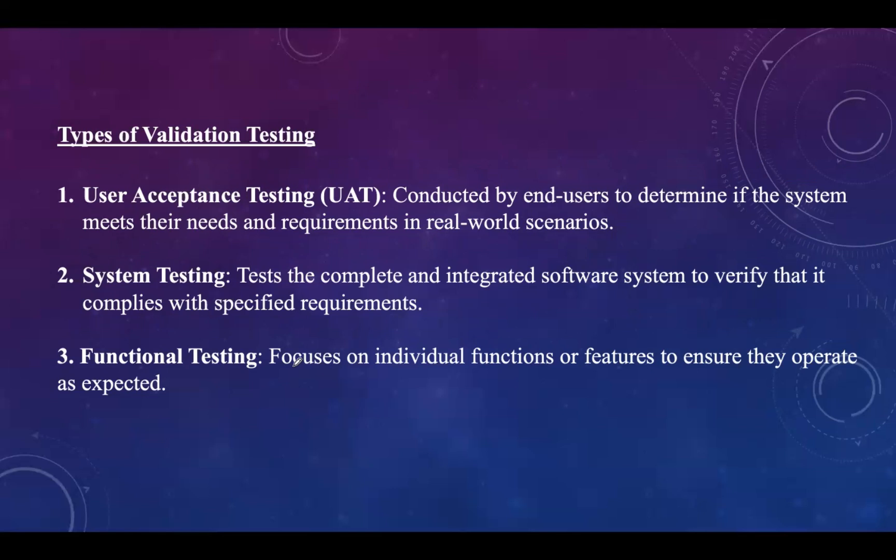Validation testing encompasses several types, each focusing on different aspects of software quality. First one is user acceptance testing, which is usually conducted by the end users to ensure that the software meets their needs and requirements. Then we have system testing, which tests the complete software system in order to check whether it is designed according to the specified requirements or not. Then we have functional testing, which validates the software against functional requirements to ensure it behaves as expected.